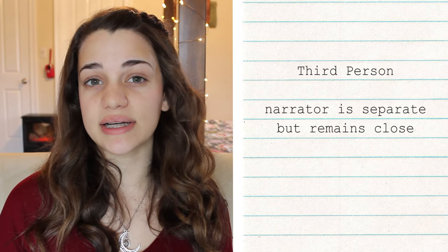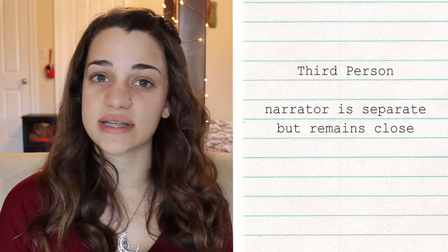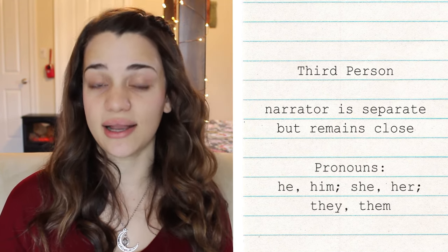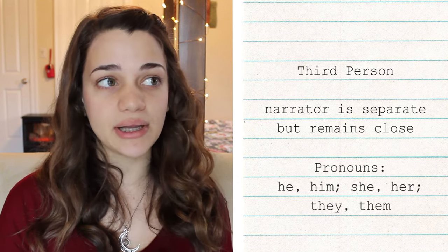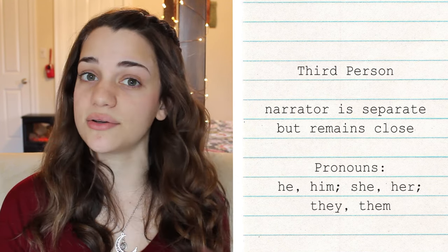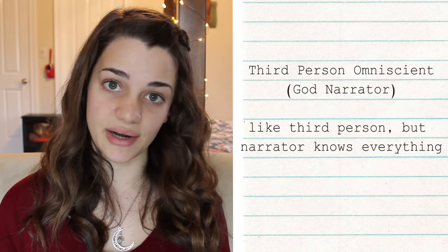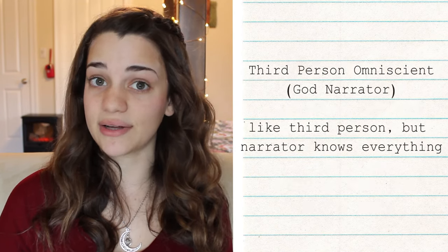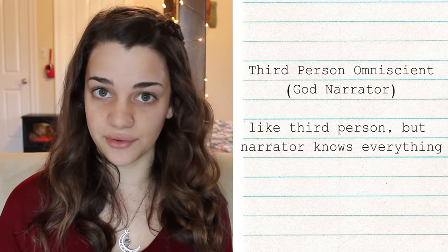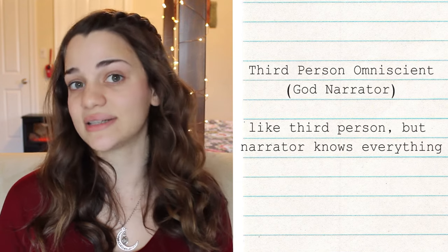Third person is when the narrator is separate from the character, but it remains very close to them for their thoughts, actions, and perspective. It uses the pronouns he, him, she, her, and they, them. It's separate, but very, very close to them still, so all it knows is what that character knows. Third person omniscient is sometimes called the god narrator. It uses the same third person pronouns, but the god narrator knows everything in the universe, so it can enter into the minds of any character and know things that the main character does not know.